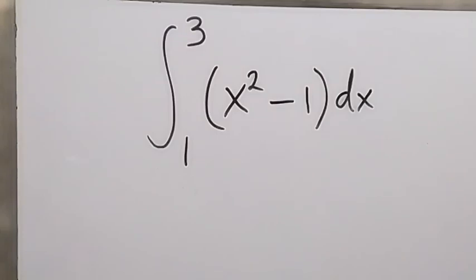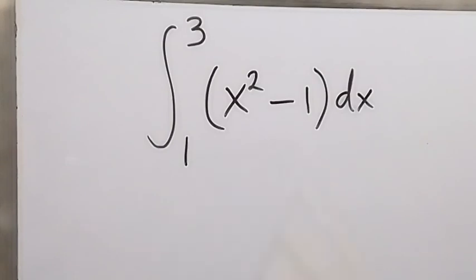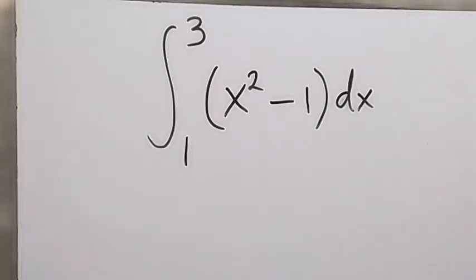Hello, you are welcome. How to evaluate this definite integral? We have the integral from 1 to 3 of x squared minus 1 dx. From here we integrate what we have inside, so the integral of that will give us...